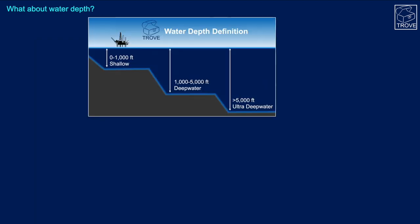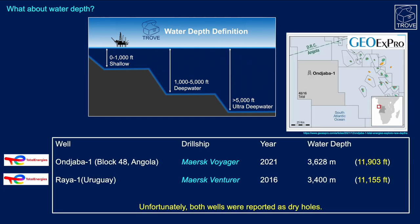In terms of water depth, we use the classification in Trove where anything less than 1,000 feet is referred to as shallow, between 1,000 and 5,000 feet is deep water, and greater than 5,000 feet is ultra-deep water. This is a fairly widely accepted system in the industry.